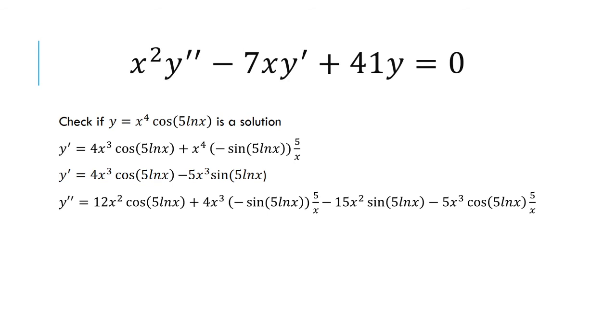We're going to leave 5x cubed alone and then take the derivative of sine 5 ln of x. The derivative of sine is cosine, we leave 5 ln of x alone, and then we take the derivative of 5 ln of x to get 5 over x. Simplify, and then get this as your second derivative.